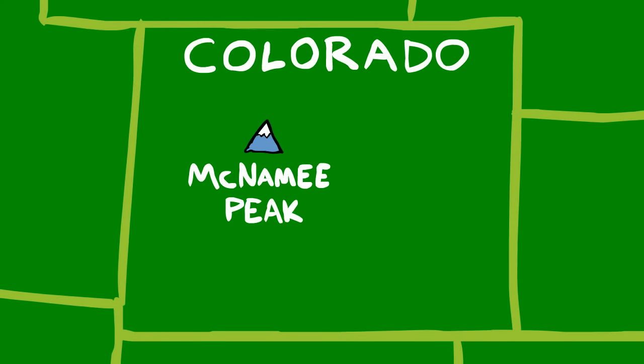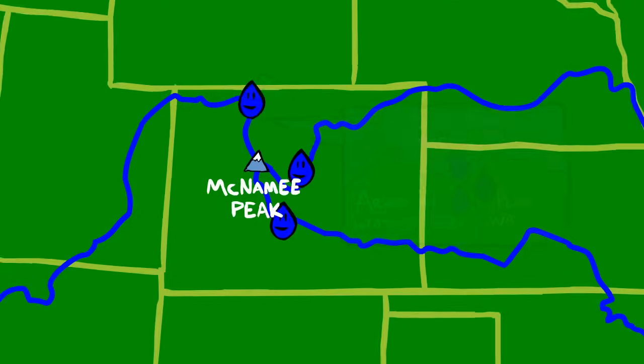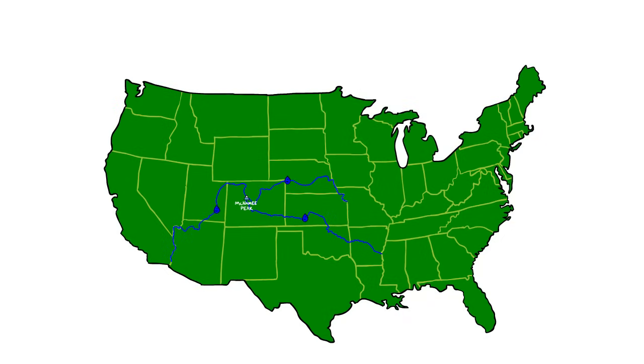Take McNamara Peak in Colorado, for example. You could have three raindrops fall within just a few feet of each other but end up in completely separate watersheds. Those few feet could end up in differences of hundreds and hundreds of miles.